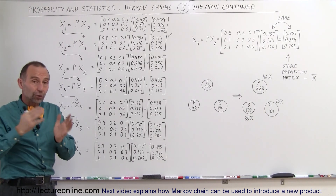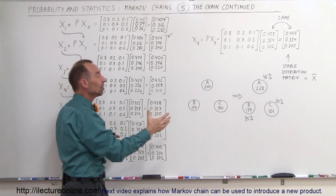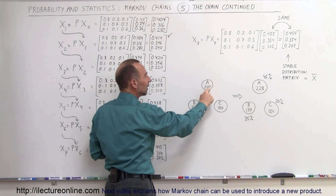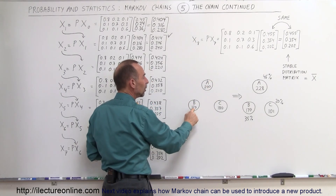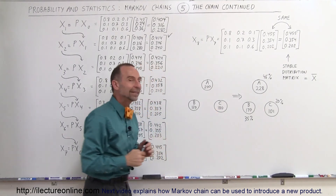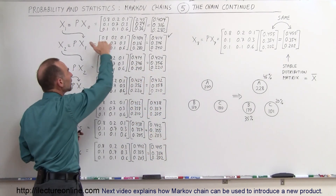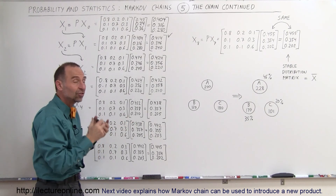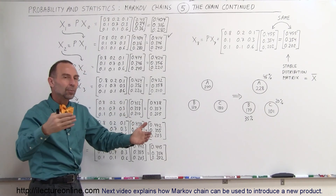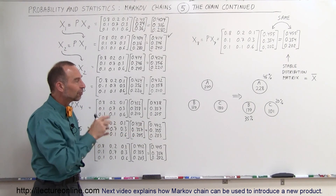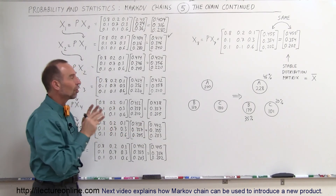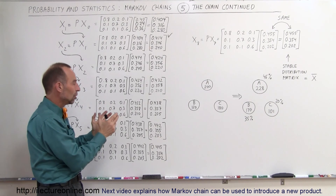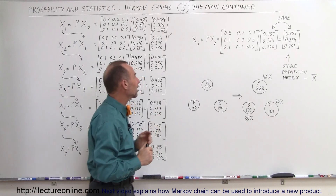This was a problem we saw earlier in a previous video where we had three stores — three grocery stores — where grocery store A received 200 customers, B 120 customers, and C 180 customers. We had a probability matrix showing how customers were expected to change from one store to another, how many would stay loyal and how many would start shopping elsewhere. Over time, using that probability matrix, we saw the state matrix begin to converge to a stable state matrix.